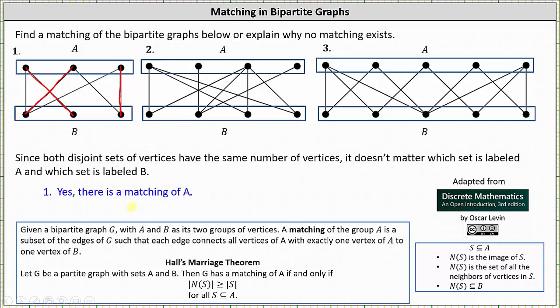So we can say yes, there is a matching of A. There's actually another matching. As long as we keep the first vertex in A connected to the second vertex in B, we can find a different matching. For example, we could connect the second vertex in A to the third vertex in B, and the third vertex in A to the first vertex in B. This set of edges is another matching of A.